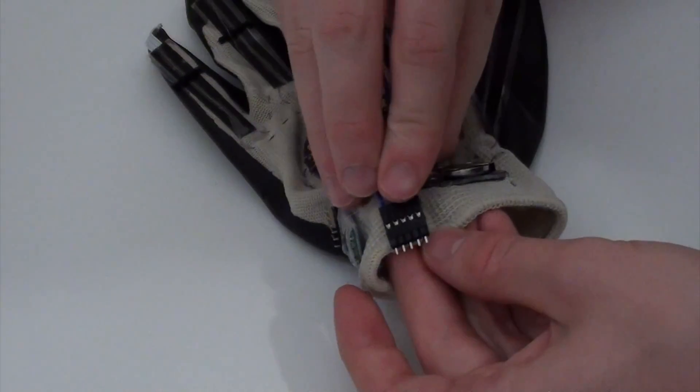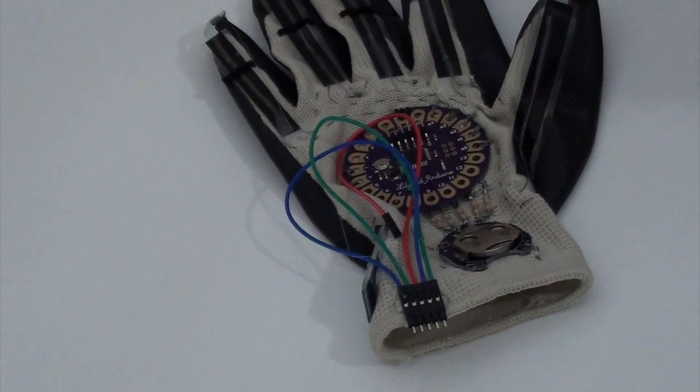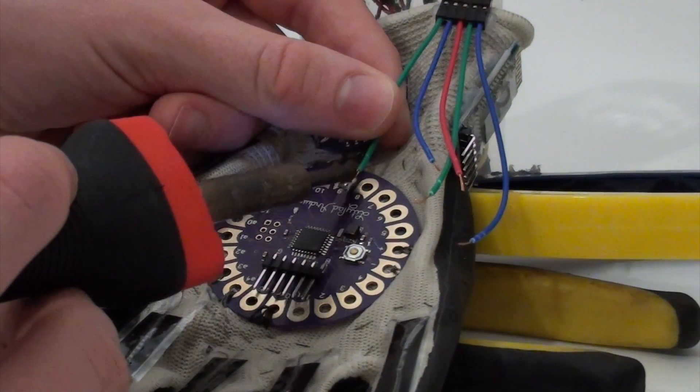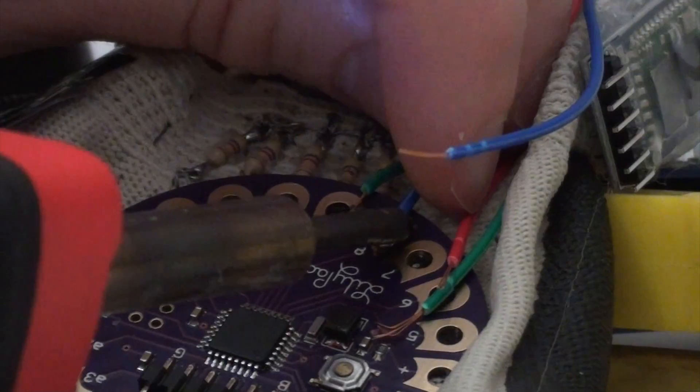For this reason, I decided to pivot, and instead of using a Bluetooth module, just connect some wires directly between the glove and the robotic arm.